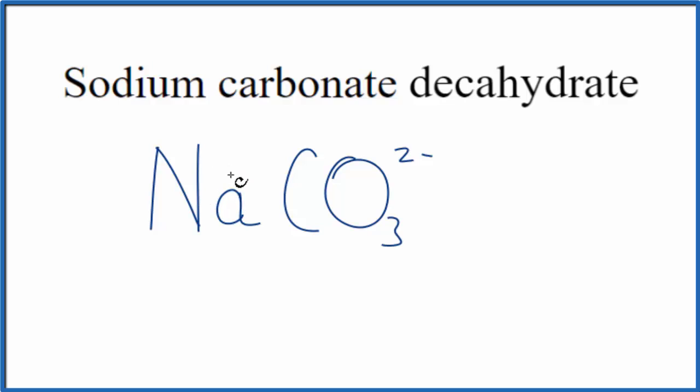Sodium, that's in group one on the periodic table, that's going to be one plus. So one plus two minus, we need two plus here. Let's put a two here. Two times one plus, that's two plus. Two plus two minus, net charge is zero. So this is the sodium carbonate.